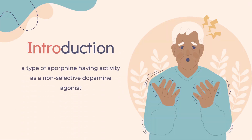Apomorphine, sold under the brand name Apicin among others, is a type of aporphine having activity as a non-selective dopamine agonist which activates both D2-like and, to a much lesser extent, D1-like receptors. It also acts as an antagonist of 5-HT2 and alpha-adrenergic receptors with high affinity.